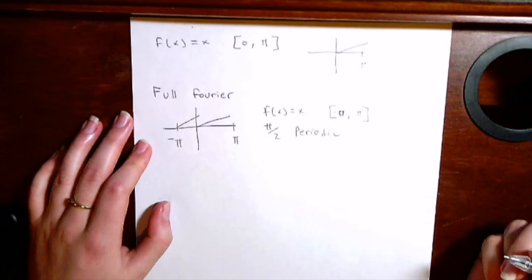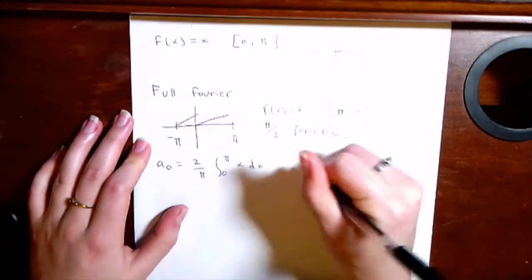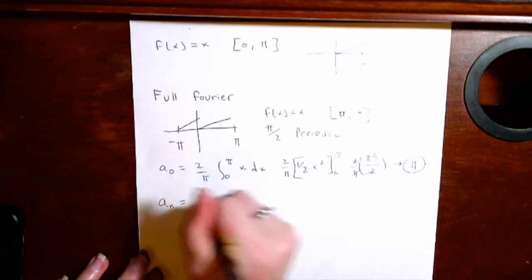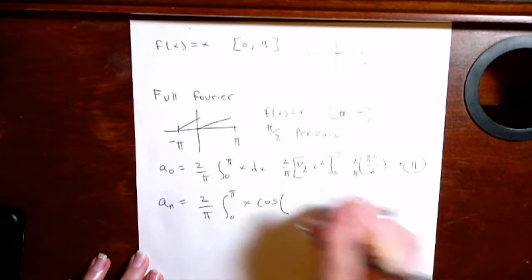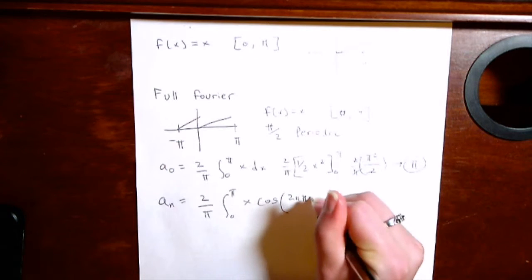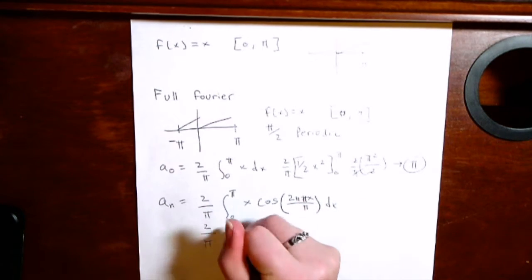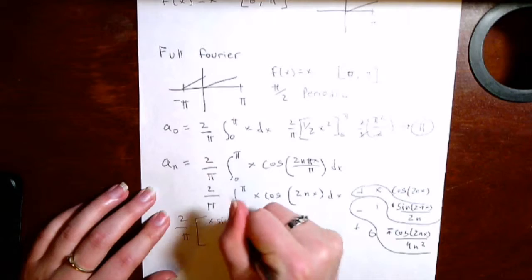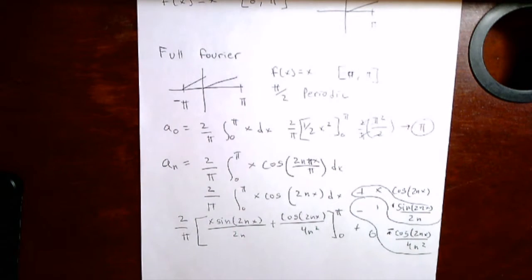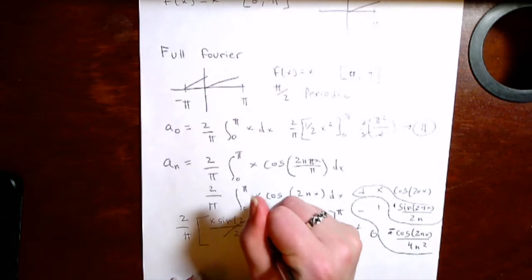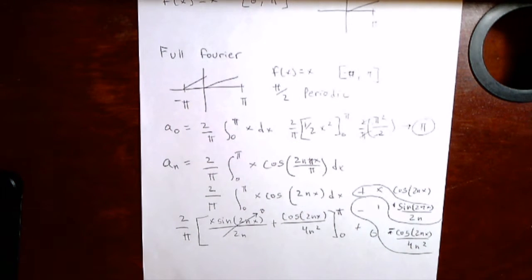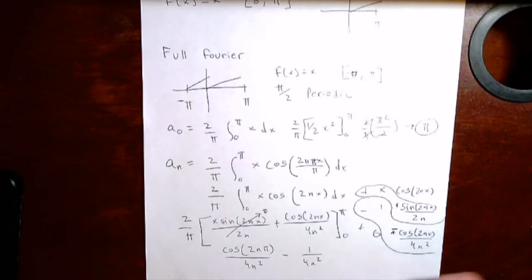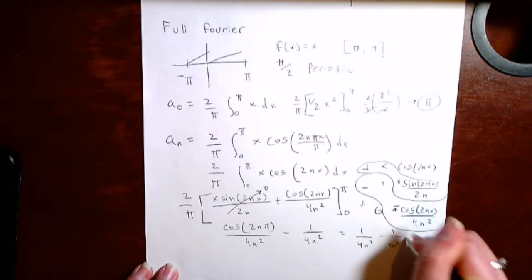Now we find a₀, which hasn't changed since there are no trig functions in its formula. We get a₀ = π, the same as in the previous example. a_n is 2 over π times the integral from 0 to π of x cosine(2nπx/π), which reduces to cosine(2nx). After integration by parts and plugging in limits, the sine term vanishes since sine(2nπ) = 0 for any n, and the other limit is also 0. Cosine(2nπ) is always 1 regardless of n, and cosine(0) is also 1, so you end up with 1/(4n²) − 1/(4n²), giving a_n = 0.